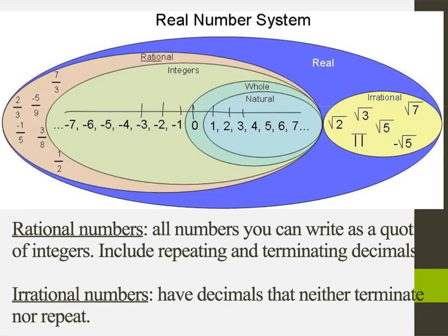Rational numbers either have a decimal that will end — for example, 1 half is just 0.5 — or like 2 thirds, that's 0.6666 and it goes on forever like that. It's a repeating decimal. So that's our awesome real number system.